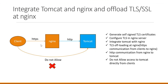We have configured TLS offloading at Nginx and made clients access Tomcat web applications only through Nginx, with direct connections disabled. We used firewalls to disable direct access since Nginx and Tomcat run on different machines. Be careful while configuring firewall rules so they do not affect existing rules. For this demo I used UFW; firewall rules can also be configured using iptables.